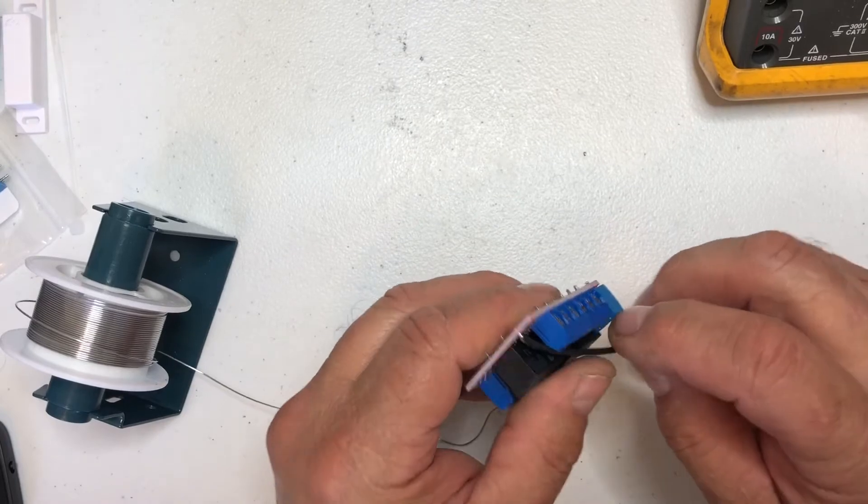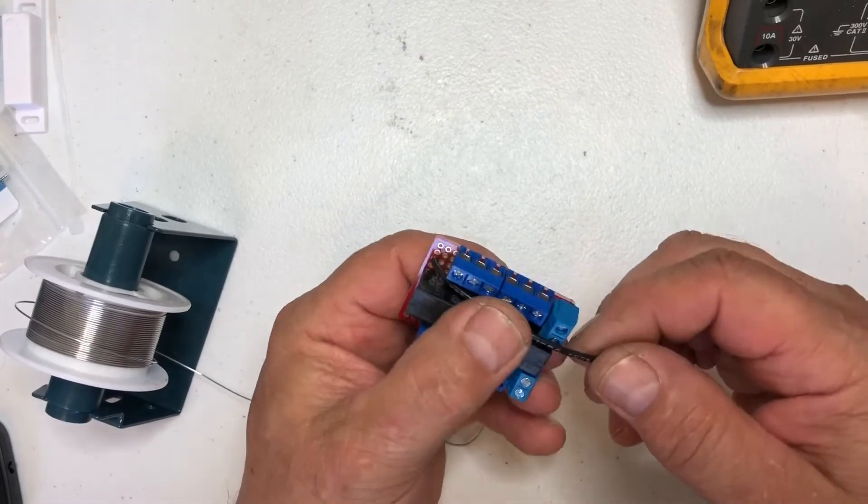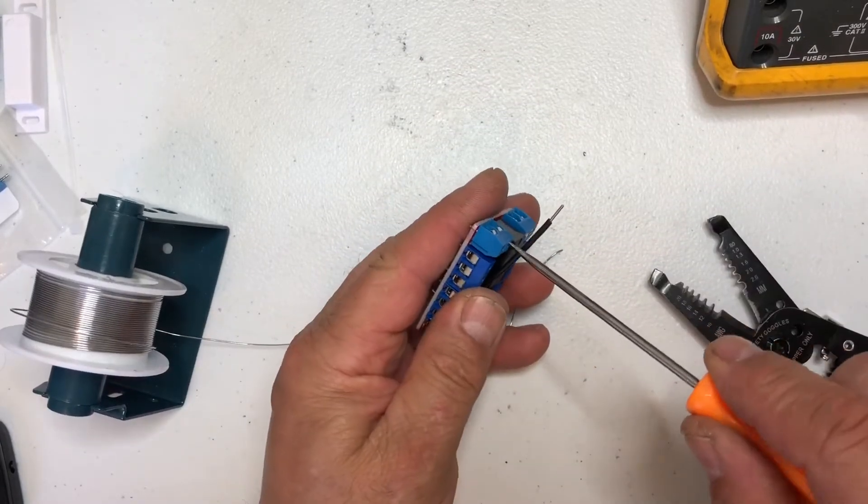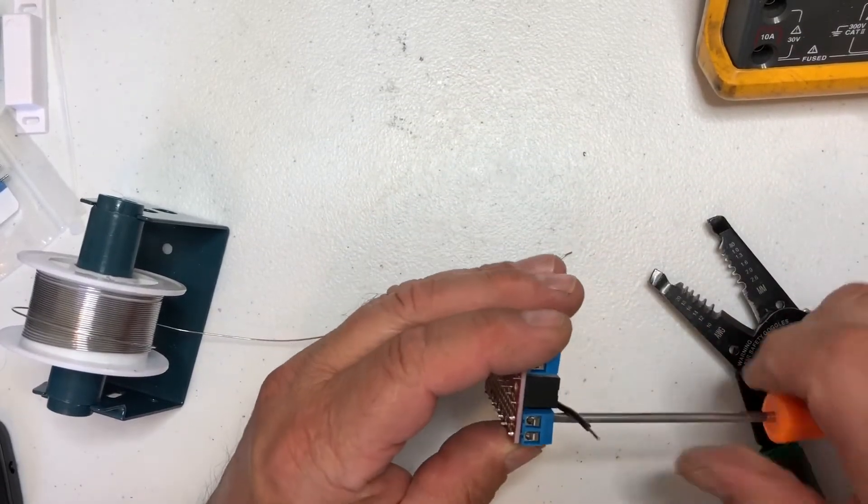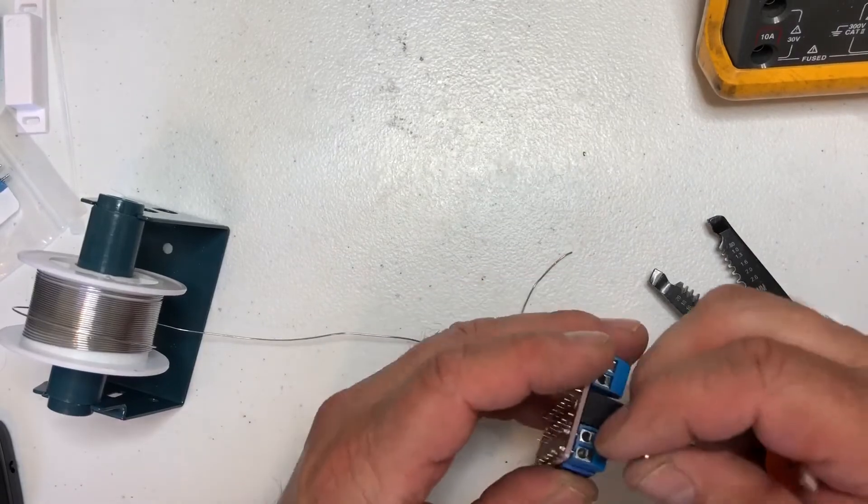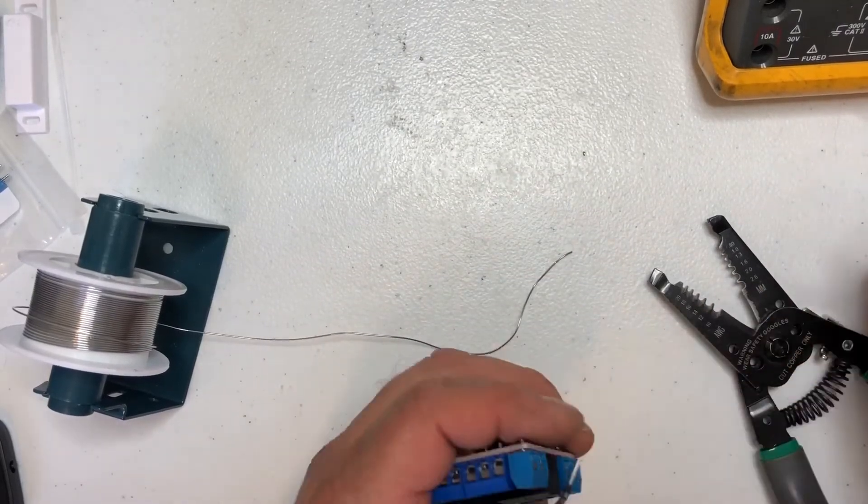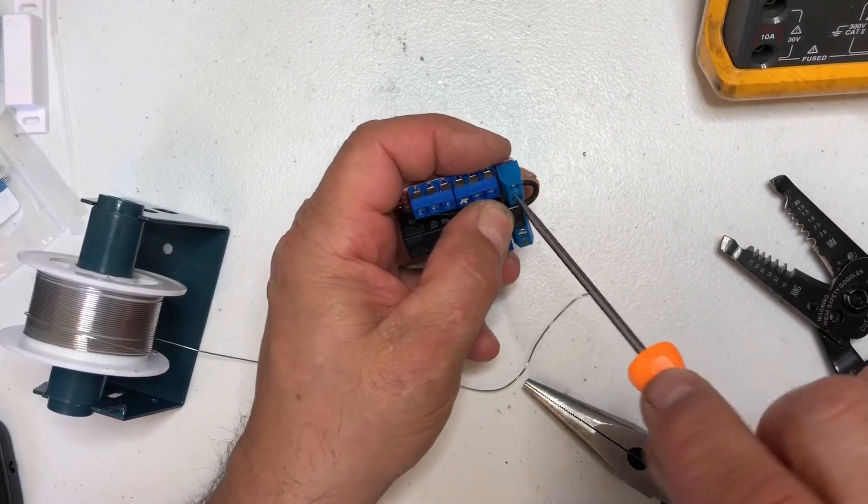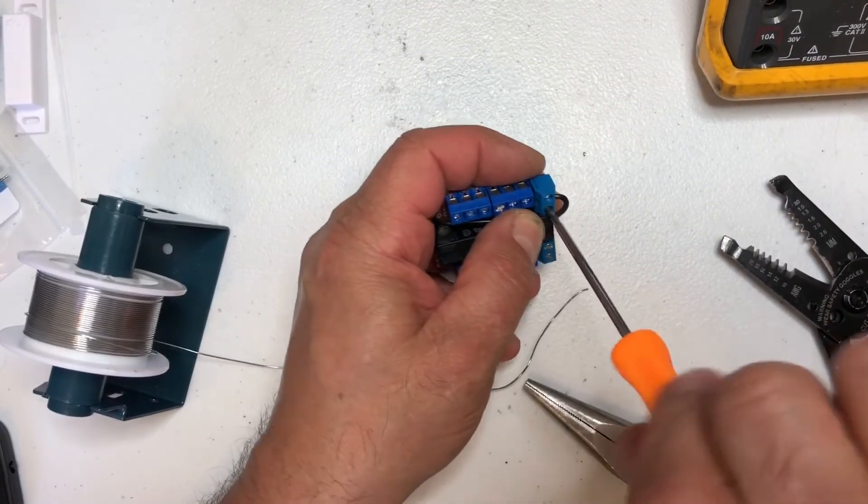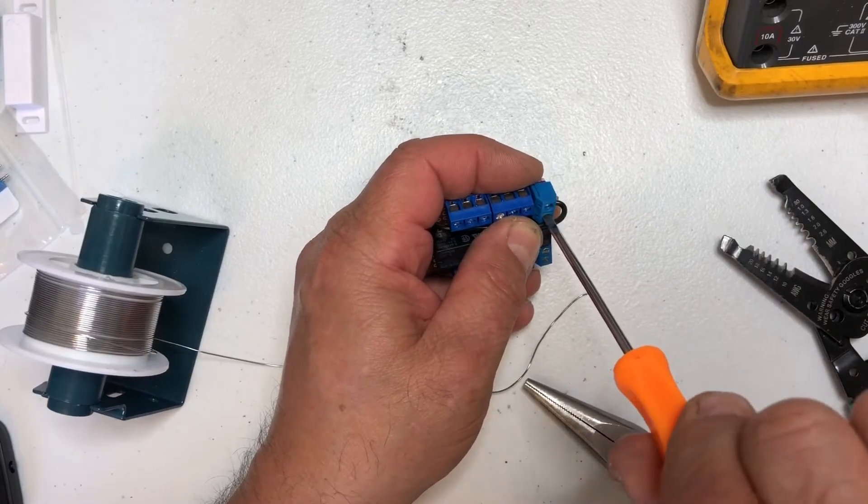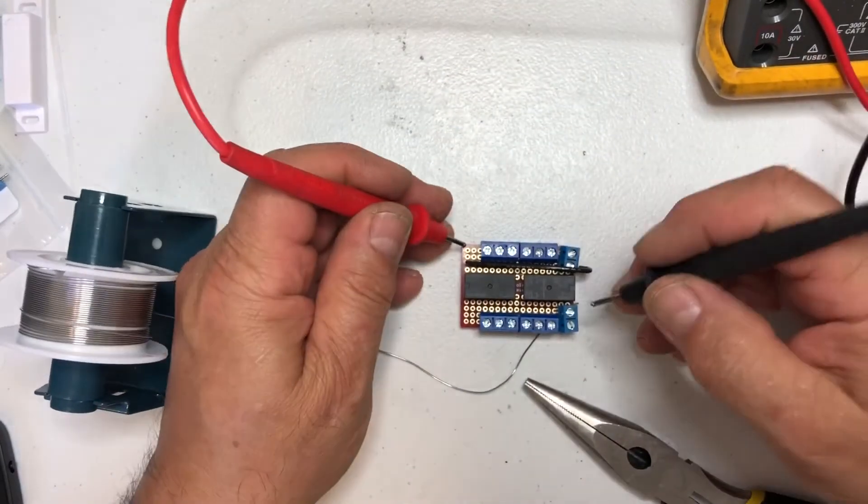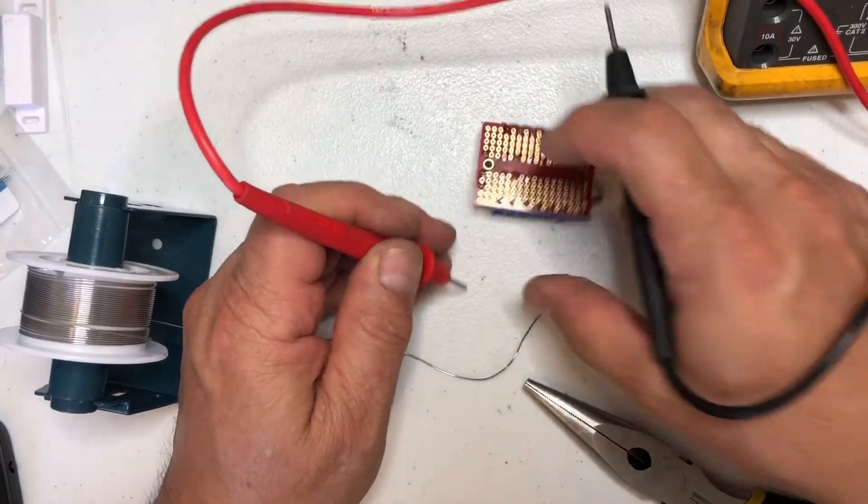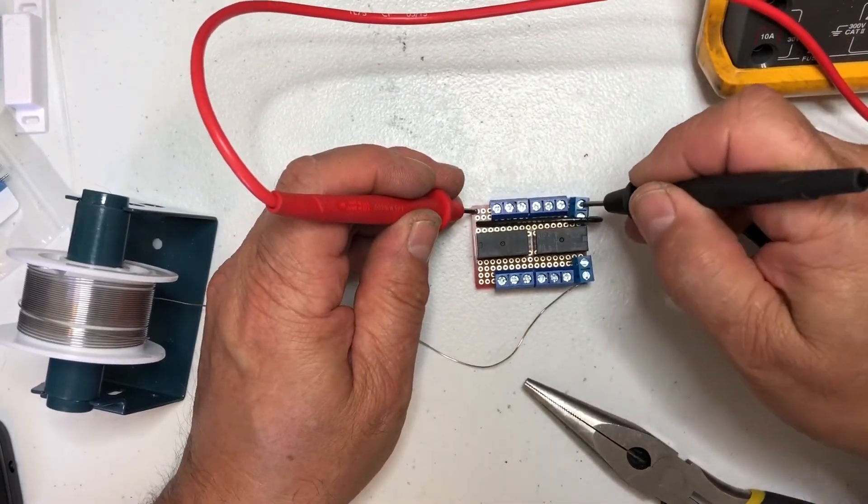And to feed the other side, the other coil here, I'm just going to use a wire and jump it over to here. We can test from anything on that row, from there to there.